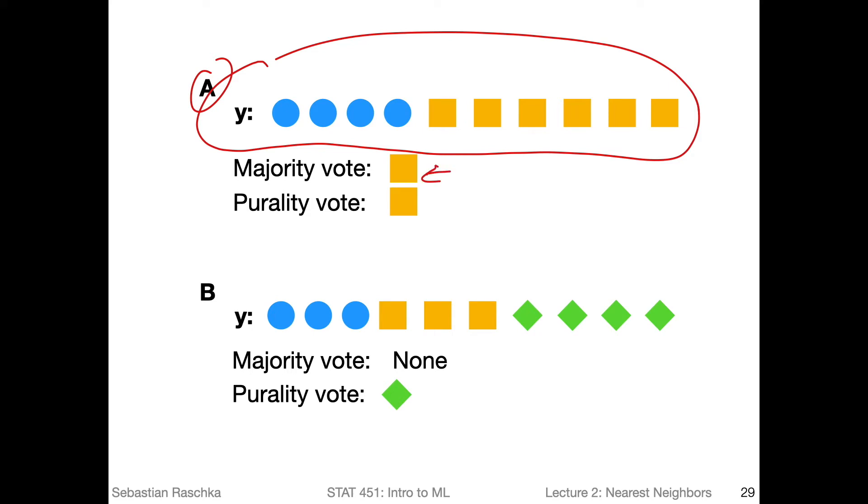Another term for that, here in this case, is plurality vote. I just see there's a typo, I wrote plurality but it should be plurality. And here too, plurality. So the plurality vote in this case would also be the square.